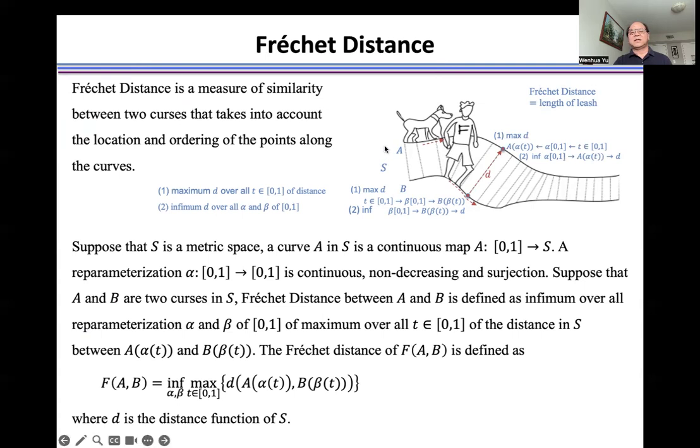We consider two curves A and B in metric space S, which are generated by a dog and his owner. Our goal is to compute the Fréchet distance D between two curves A and B.